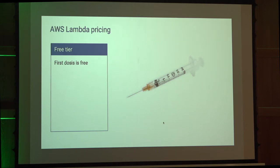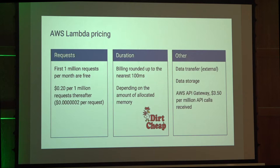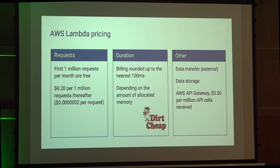With the pricing, the first dose is free, as they say. Amazon has a rather generous free tier — the first million requests per month are free, and after that you pay only 20 cents per million, which is very cheap. There's also the amount of time your code runs and the amount of memory allocated, and a third pillar is how much data you transfer outside the Amazon Cloud. If you're hosting data in the Amazon Cloud you pay for that as well. Should you decide to use API Gateway, you pay as much as $3.50 per million API calls received.